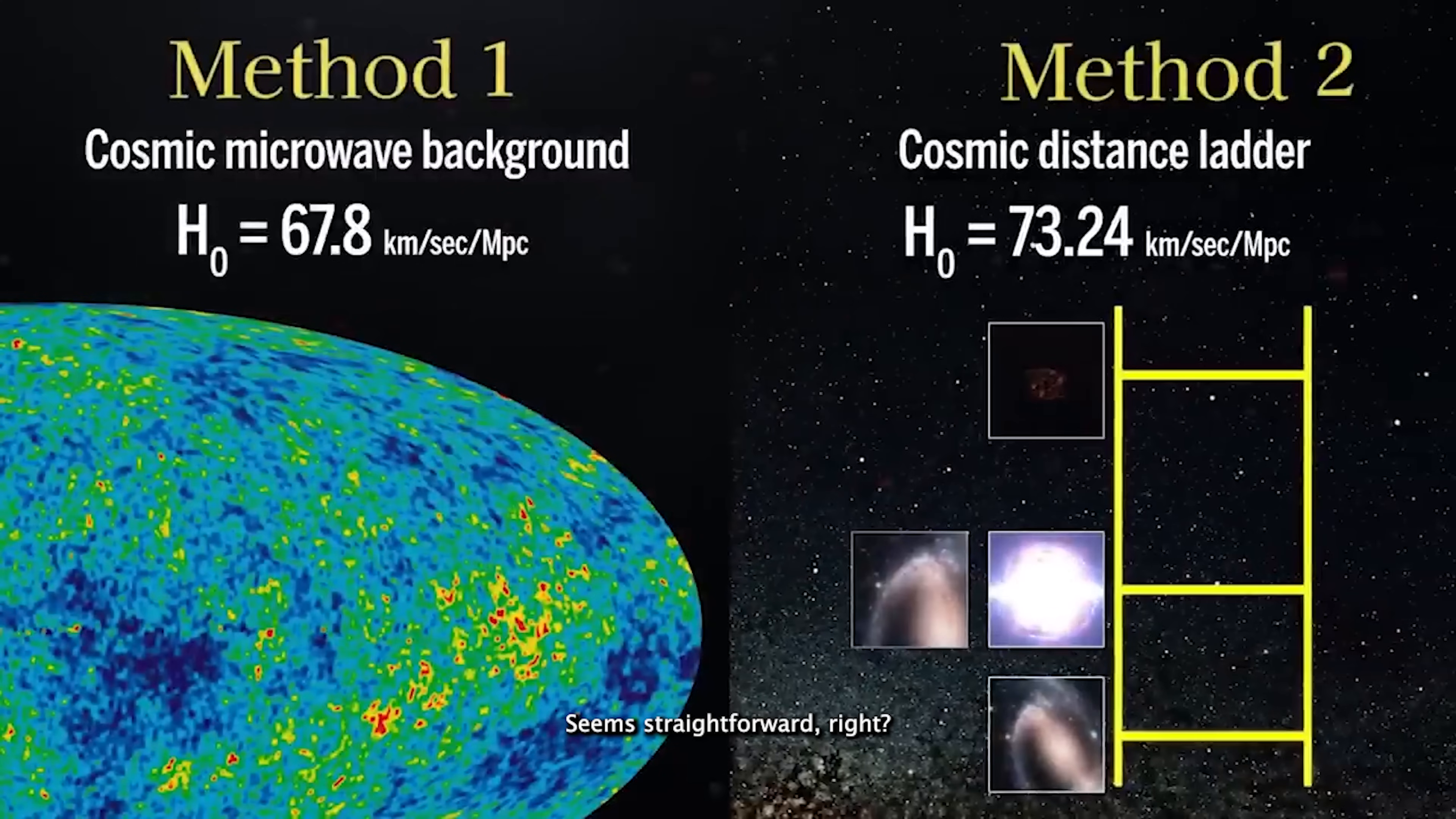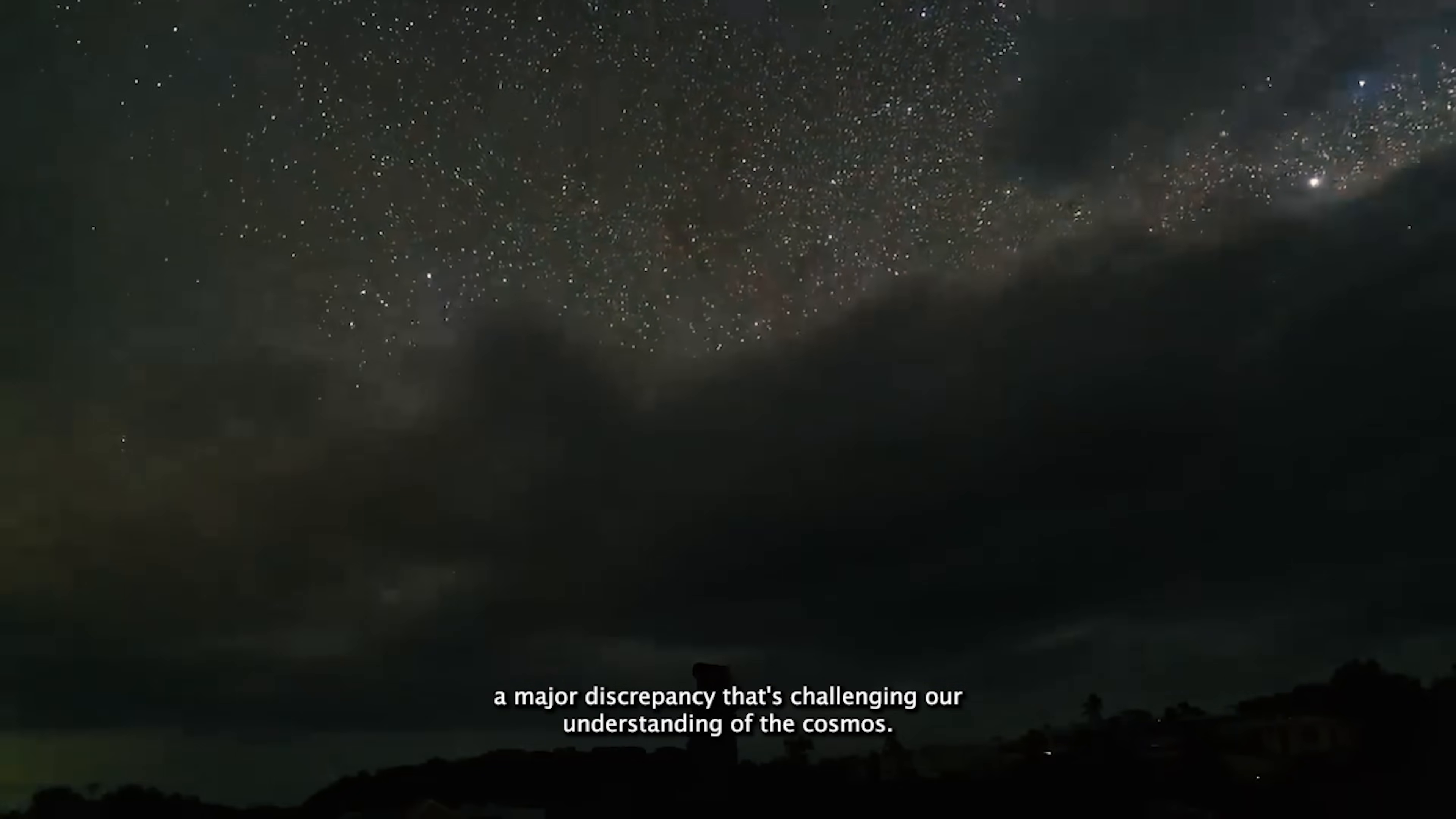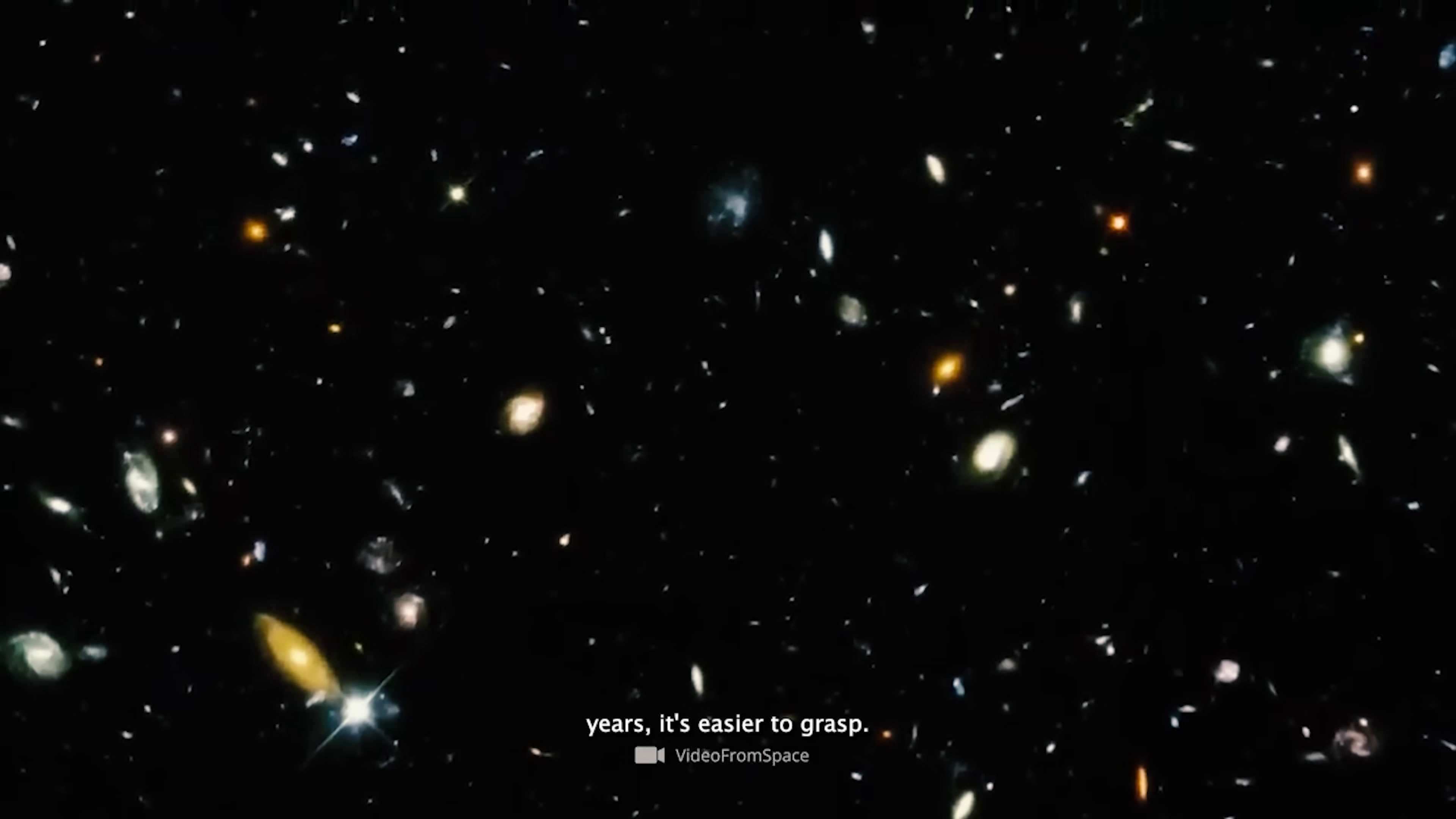Seems straightforward, right? But in reality, this number is at the heart of the so-called Hubble tension, a major discrepancy that's challenging our understanding of the cosmos. Sure, the unit might sound a little odd at first, but once you know that a megaparsec equals about 3.26 million light-years, it's easier to grasp.